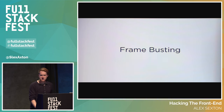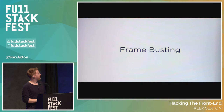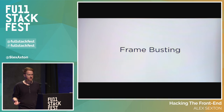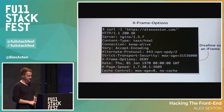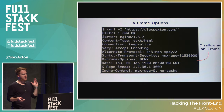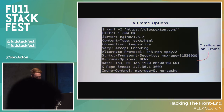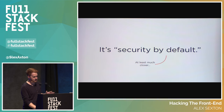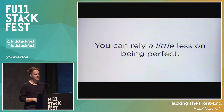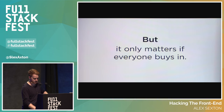Frame busting is another good practice. We talked about that SVG hack — unless you explicitly want to be iframed, like the Facebook Like button, you should prevent it. You can send an X-Frame-Options header — it's old and has been replaced with CSP, but there are still plenty of browsers where it helps. The idea is: add all these different headers, lock everything down by default, open up little holes, and you rely less on being perfect every time. You can build web apps the way you already want to — as long as you have that good base. But it only matters if we all buy in. So don't mess with the web.